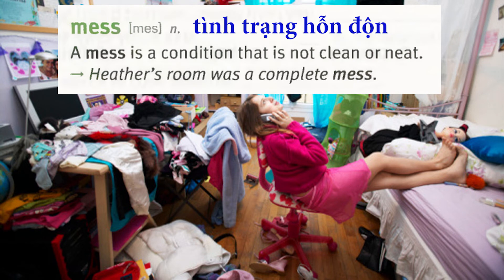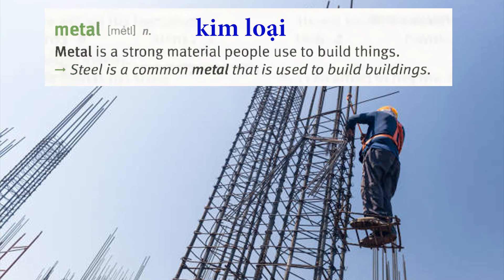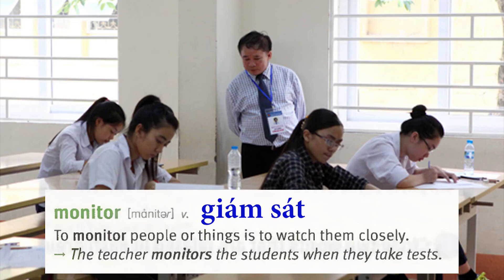Mess: A mess is a condition that is not clean or neat. Heather's room was a complete mess. Metal: Metal is a strong material people use to build things. Steel is a common metal that is used to build buildings. Monitor: To monitor people or things is to watch them closely. The teacher monitors the students when they take tests.